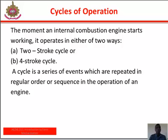Cycle of operation: once an internal combustion engine starts working, it operates in either of two ways — a two-stroke cycle or a four-stroke cycle. A cycle is a series of events repeated in regular sequence during the operation of an engine. In the two-stroke cycle, a power stroke takes place at every revolution of the crank; the crankshaft makes one revolution and the piston makes two strokes in each cycle. In the four-stroke cycle, a power stroke occurs at every other revolution of the crank.